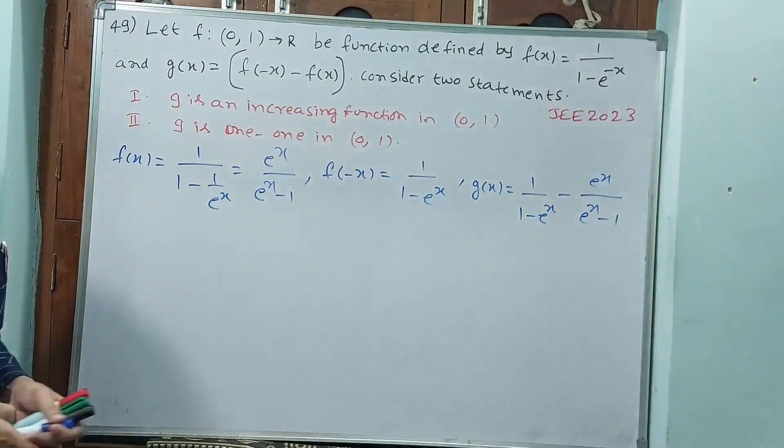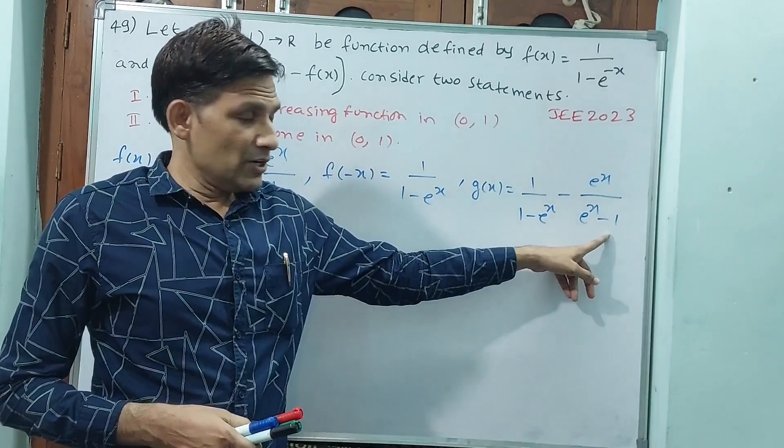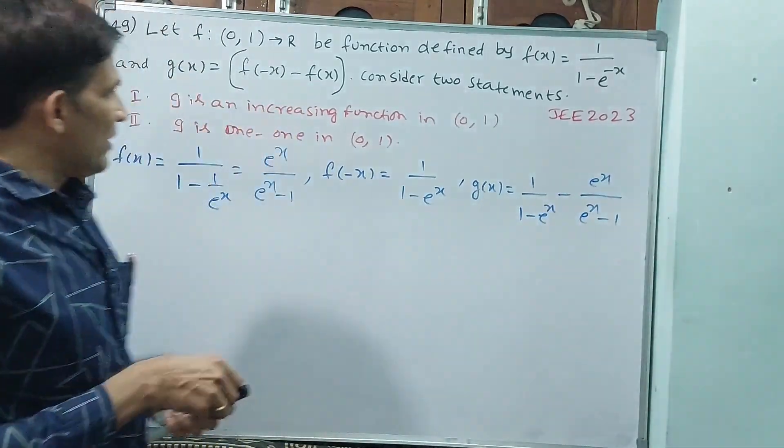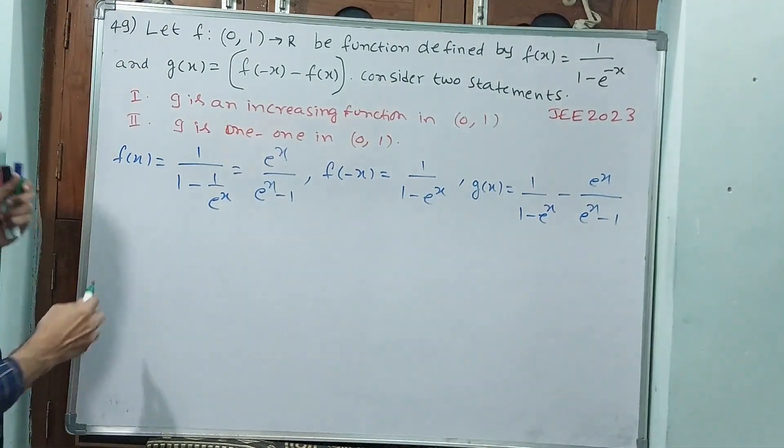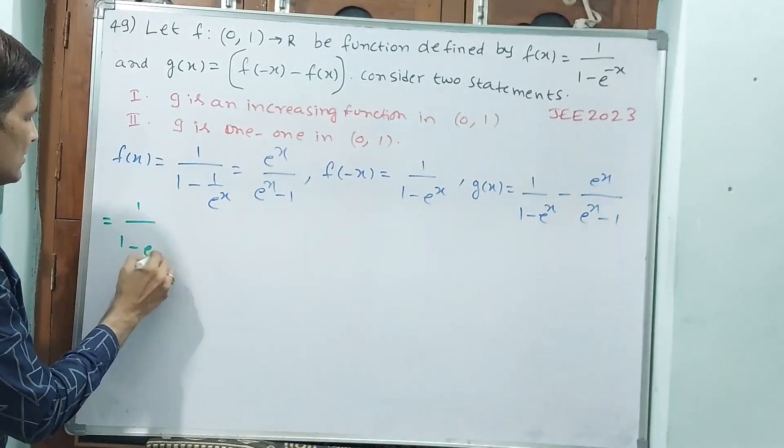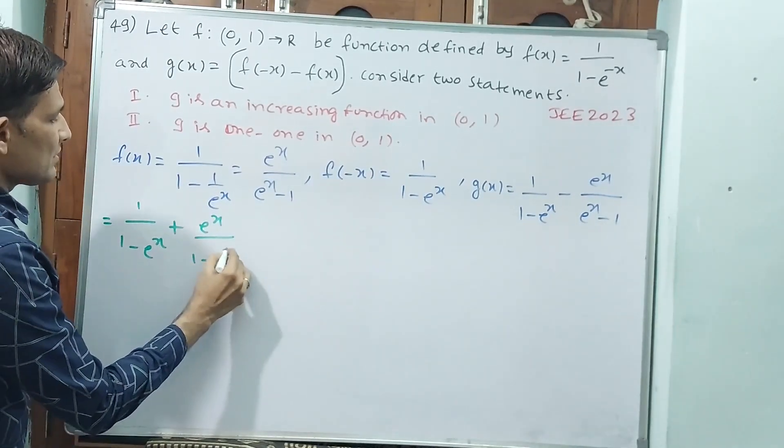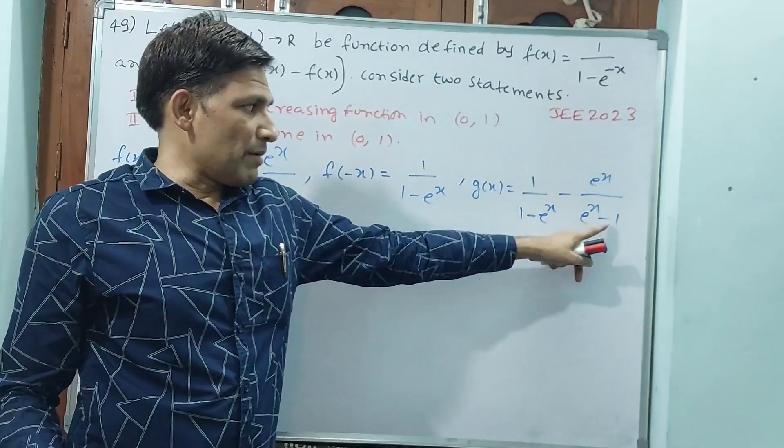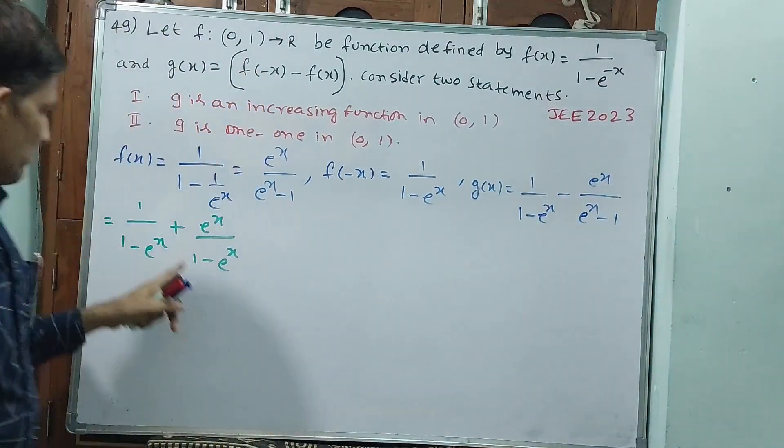See, if you observe denominator, 1 - e^x and e^x - 1. If I take minus, this is going to become plus, and 1 - e^x it will be. That means g(x) is 1/(1 - e^x) plus e^x/(1 - e^x). Minus I have taken common, so this is going to become minus, this is going to become plus.